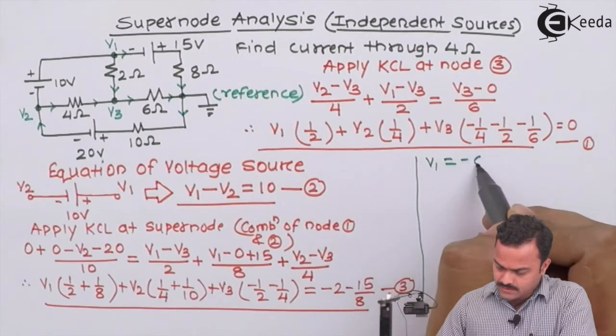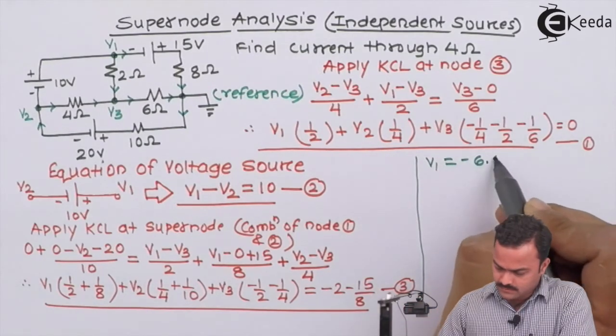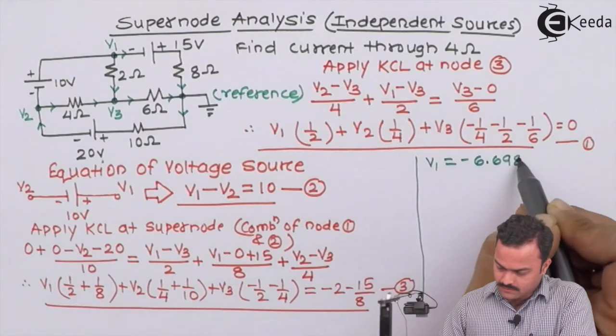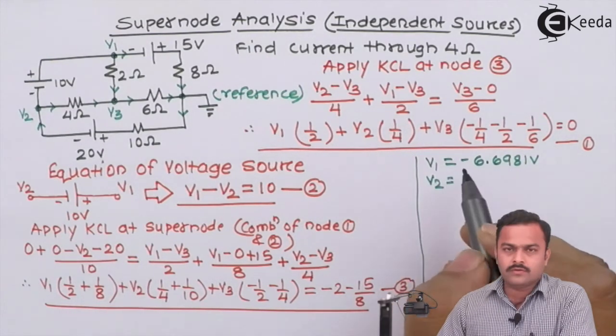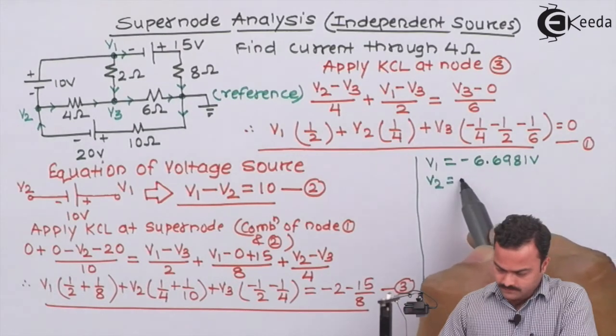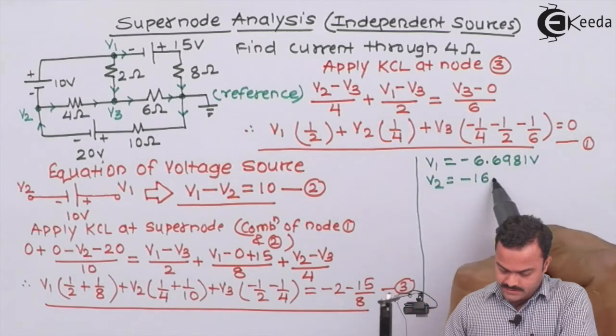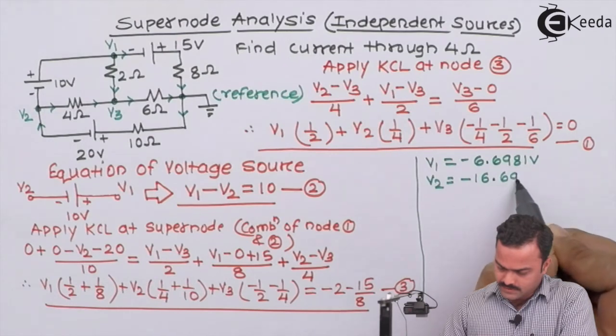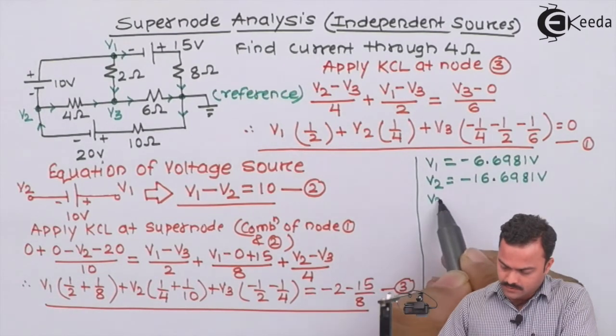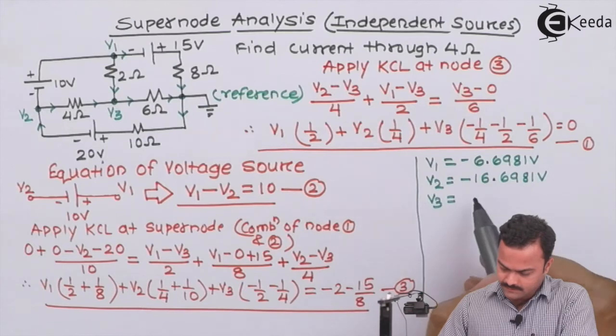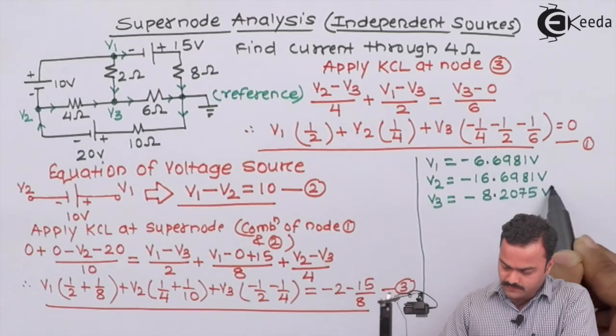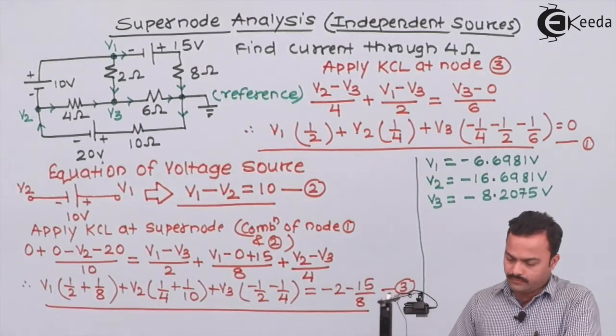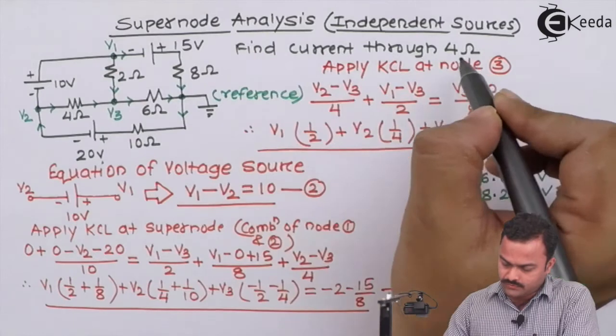So upon solving, we will get the values of node voltages V1, V2, V3 as: V1 will get as minus 6.6981 volt, V2 as minus 16.6981 volt, and V3 as minus 8.2075 volt.